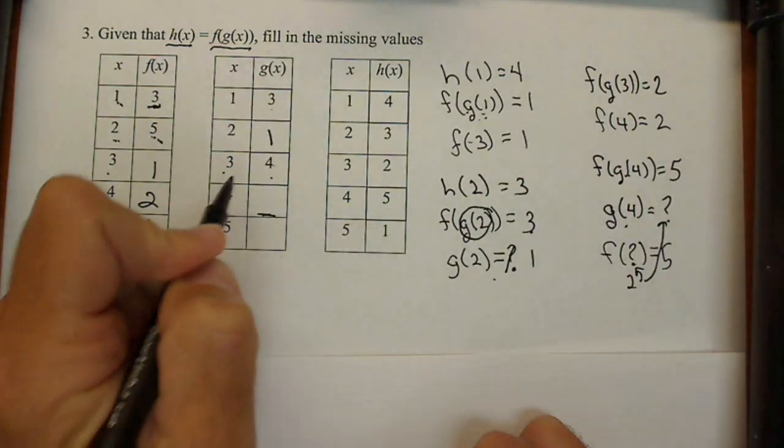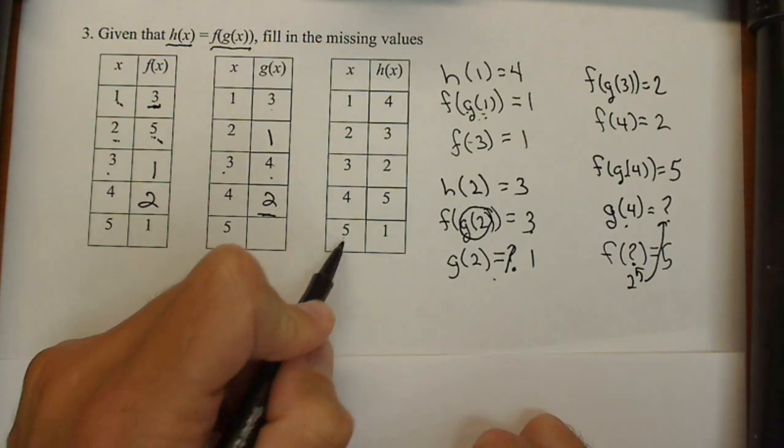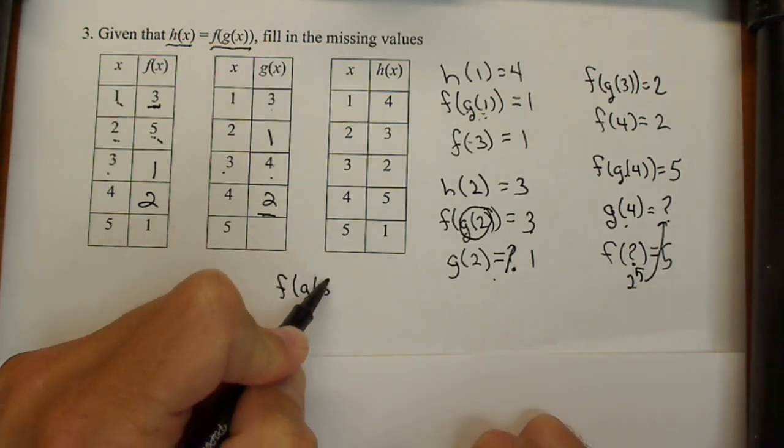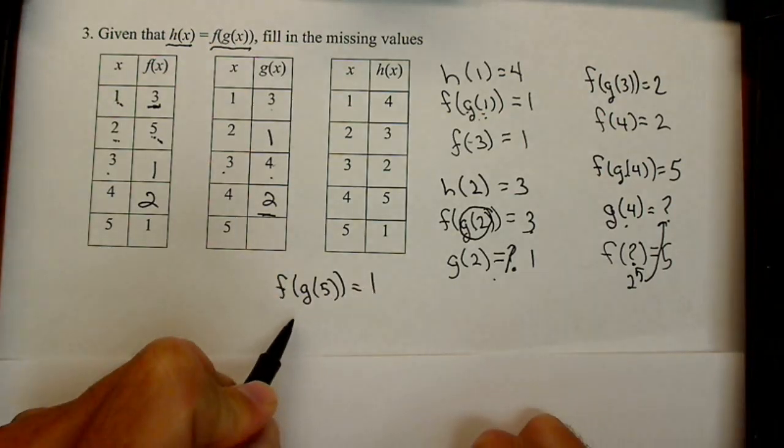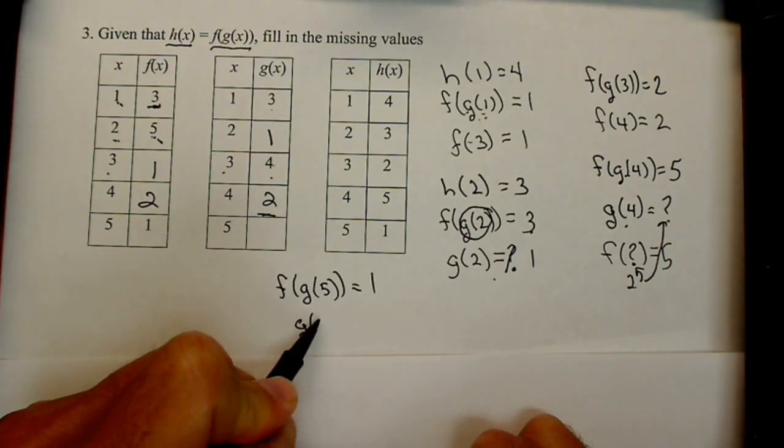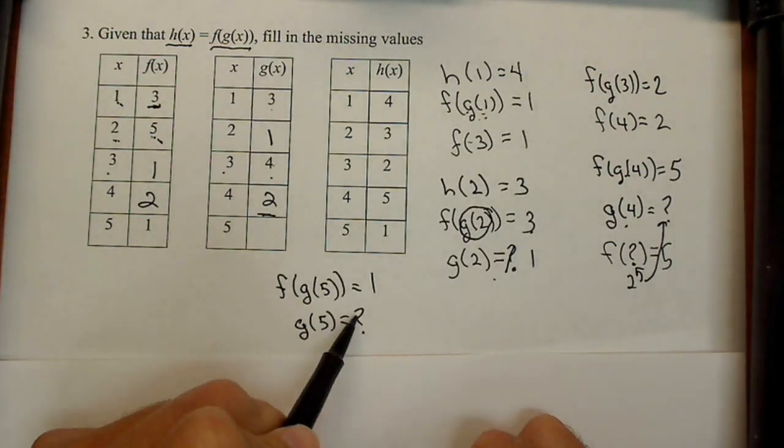One last one: f(g(5)) equals 1. g(5) we don't know - what does that equal? Who knows - but what we do know is that when put into f it's got to come out to be 1.